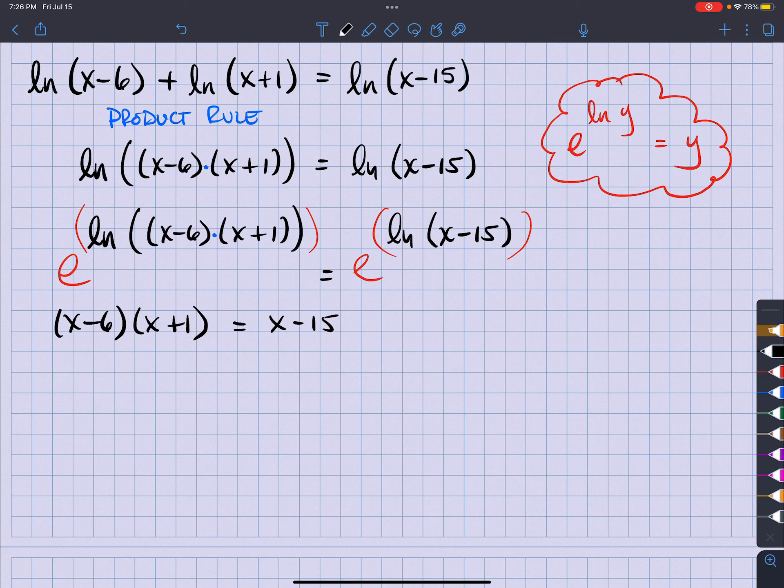Ooh, that means on the left side, I actually have to FOIL. So I have x squared plus x minus 6x minus 6 is going to equal to x minus 15.